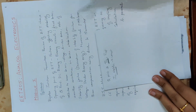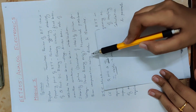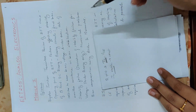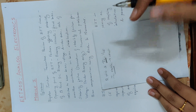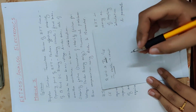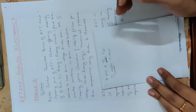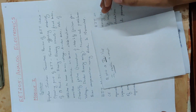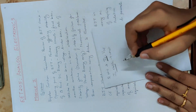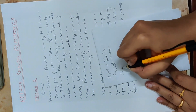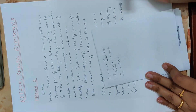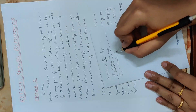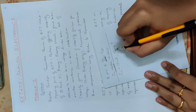Next topic: bias compensation. Bias compensation means that each component — diode and thermistor — is used. Now, the answer is: we want the temperature to remain such that IC stays constant. Suppose IC value is 10 mA.